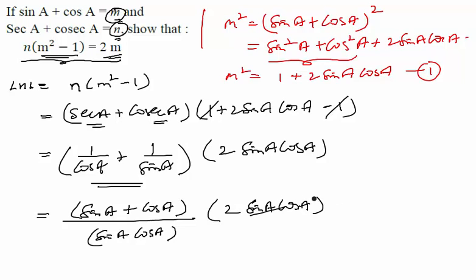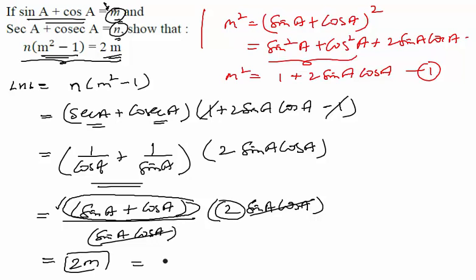So if you see, your sin a cos a is getting cancelled from numerator and denominator. Also, your first bracket is sin a + cos a, which is already given to you as m. So let us use this value. You are left with m in the first bracket and 2 in the second bracket. So overall value is 2m, which is also equal to your RHS, hence proved.